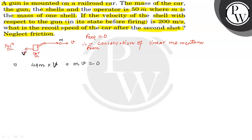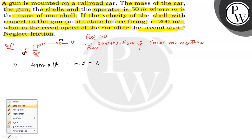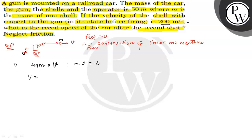यहाँ से जो हमारे पास में capital V की value आएगी — directly बता देता हूँ — capital V is equal to: V की value दी गई है 200 m/s, M ने M को cancel कर दिया, तो यह आएगा minus 200 divided by 49 meter per second। यह किस direction में आएगी? Towards left direction में आएगी।